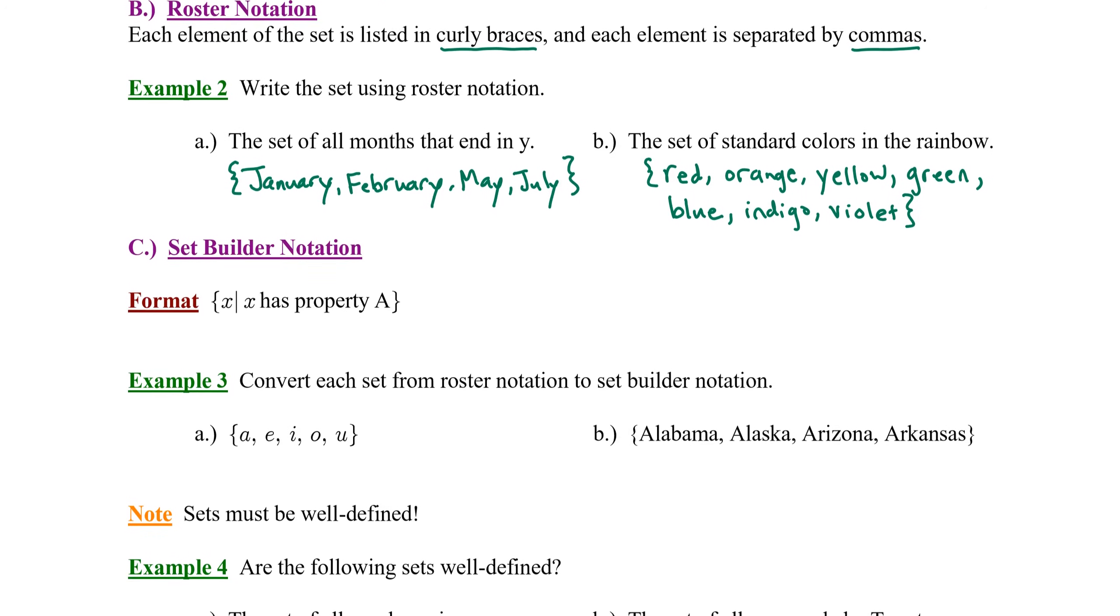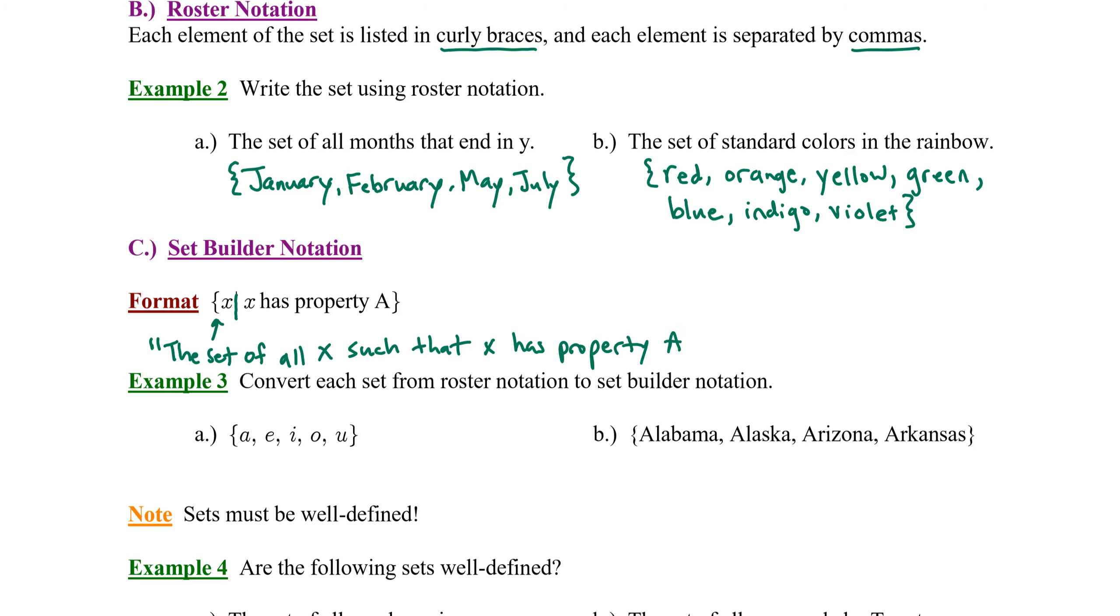The other type of notation that we'll use to denote a set in addition to roster notation is set builder notation. The format for set builder notation is fancy. It includes a description of the set enclosed within curly braces. Here's the format. We're going to read this. The set of all X such that X has property A. When we see that open curly brace, we read it the set of all. And then X is simply a representative of the items in the set. When we see the vertical bar, we translate that as such that. And then on the right side of that vertical bar, we have the description of the set. X has property A. So we're taking the description of the set that we learned in part A, and we're inserting that into this special format called set builder notation. The idea is we could build a set based on this description.